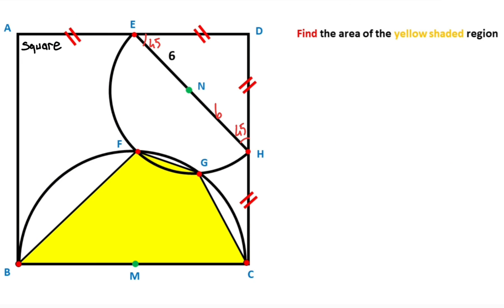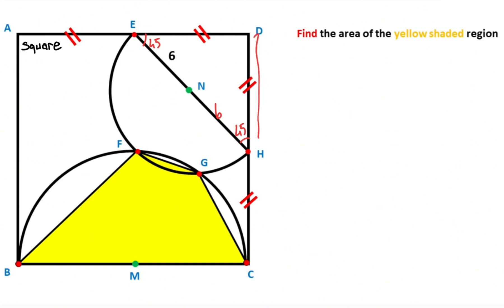Next step: if there are 12 units opposite the 90 degrees, then opposite the 45 degrees must be equal to 6√2. So here is 6√2, here is 6√2, and also here is 6√2.